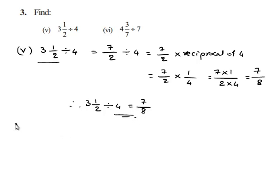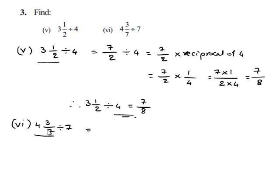Take down the sixth problem: 4 and 3/7 divided by 7. Here 4 and 3/7 is a mixed fraction, so first we have to convert 4 and 3/7 into an improper fraction and then we have to divide.